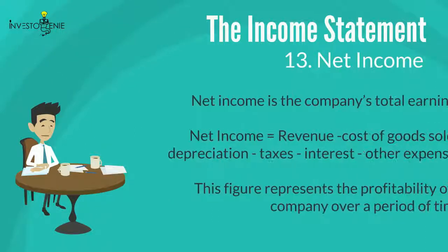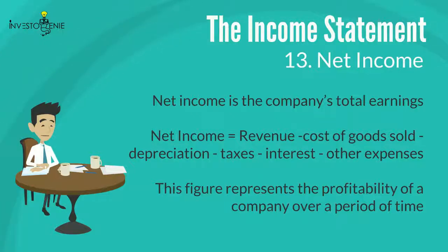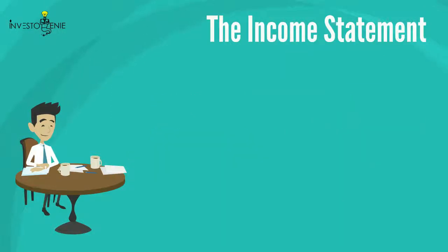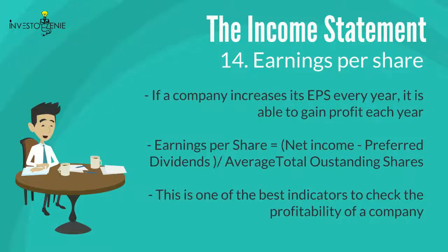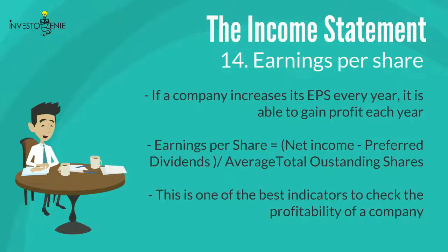Thirteen: net income is the company's total earnings. This is calculated by taking revenue and subtracting cost of goods sold, depreciation, taxes, interest, and other expenses. This figure represents the profitability of a company over a period of time. Fourteen: earnings per share (EPS) is another indicator of profitability. If a company increases its EPS every year, it is able to gain profit each year. EPS is calculated as net income minus preferred dividends divided by average outstanding shares.